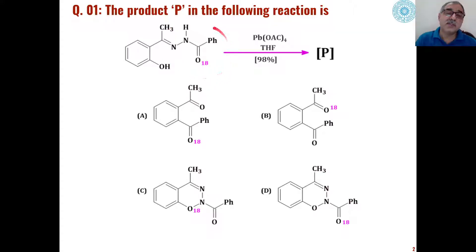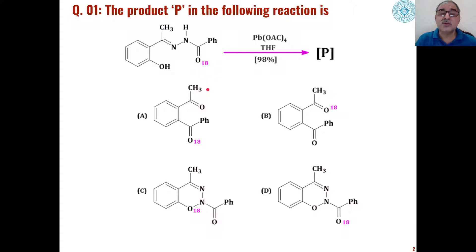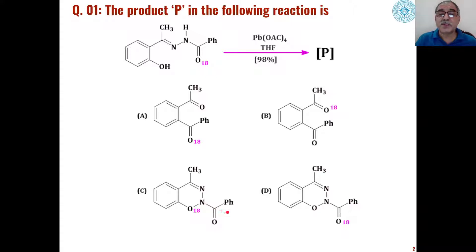The first problem is the reaction of N-benzoyl hydroxamic acid in the presence of lead tetraacetate — what kind of product is formed. Here we are using O18 in the case of benzoyl, and during the reaction this O18 oxygen goes to which part of the molecule needs to be understood through product formation. Out of these four choices, what will be the product and where will this O18 go?